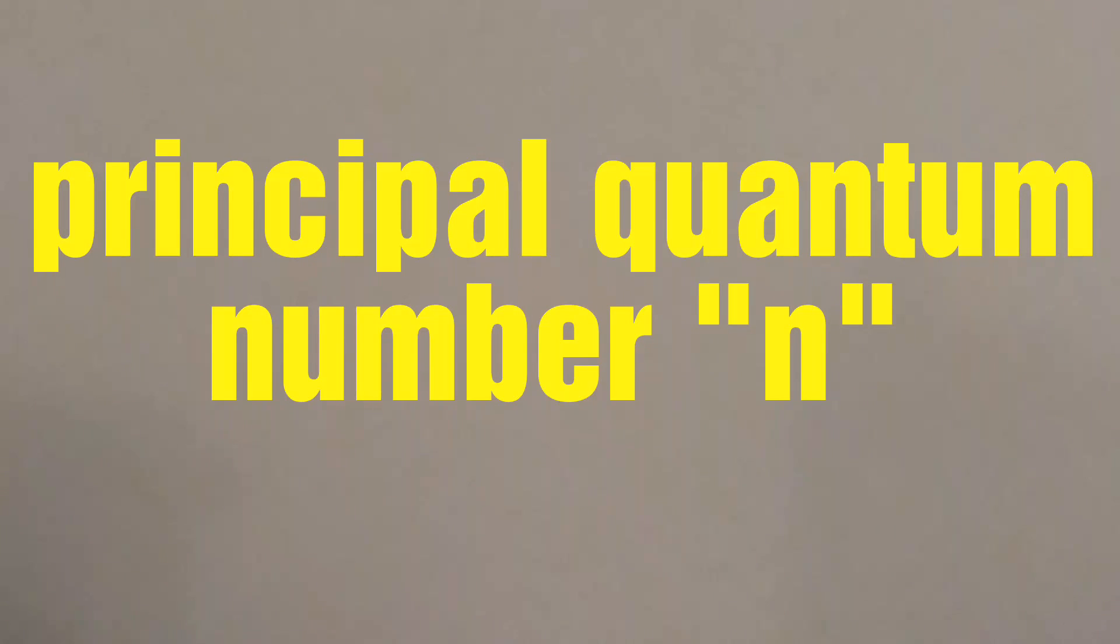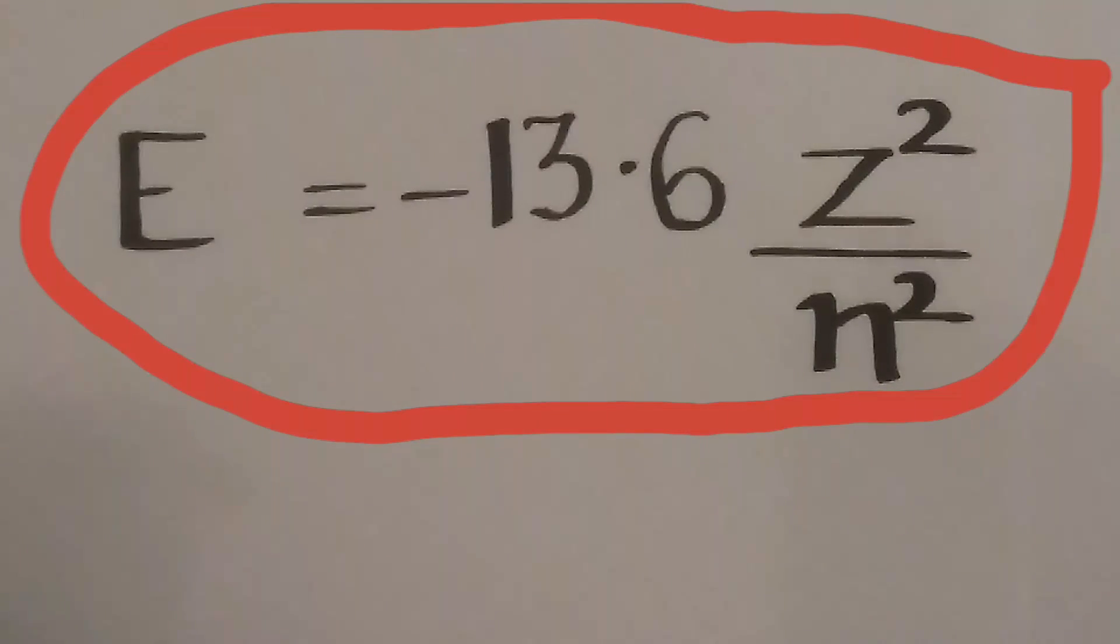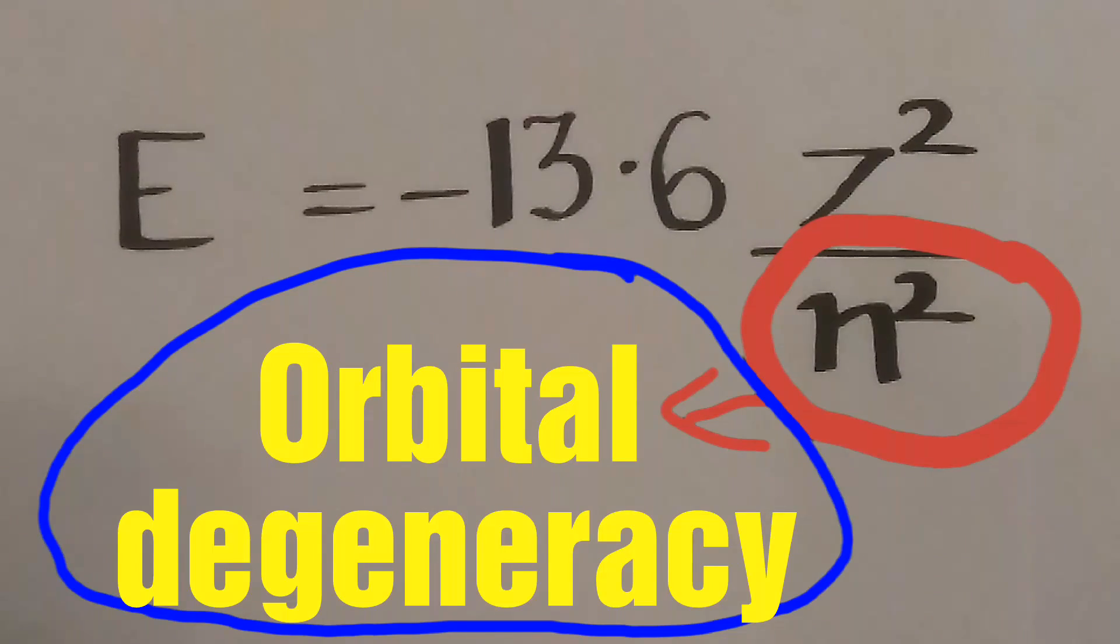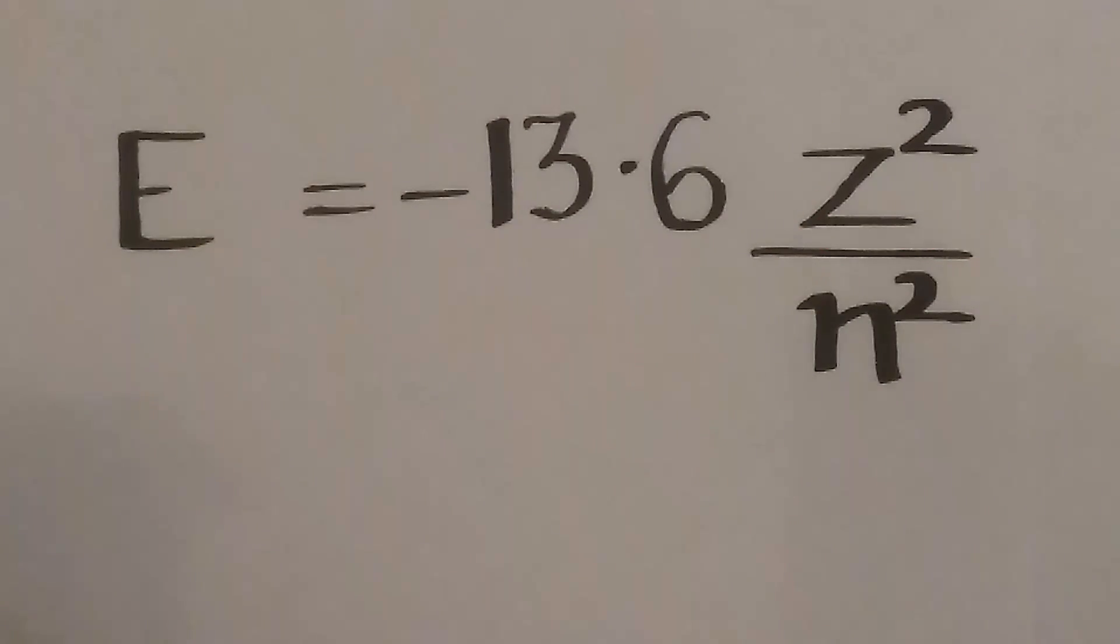The energy of the orbital with principal quantum number n is as follows: E equals negative 13.6 Z squared over n squared. N squared is the orbital degeneracy, which will be our answer.